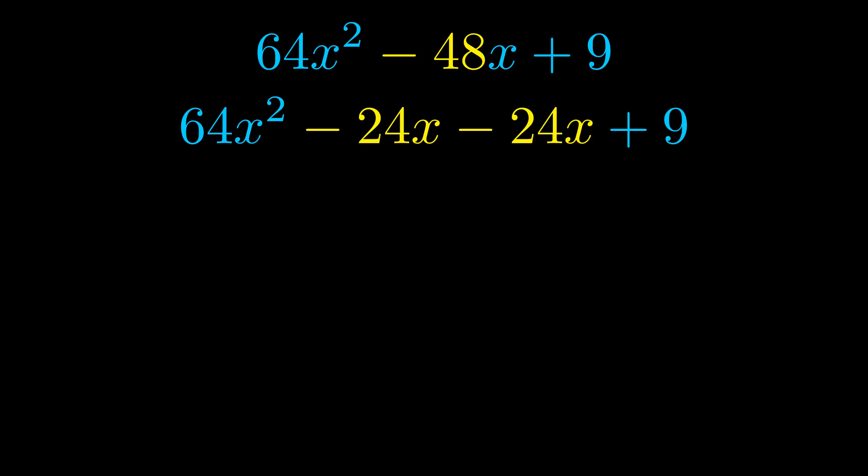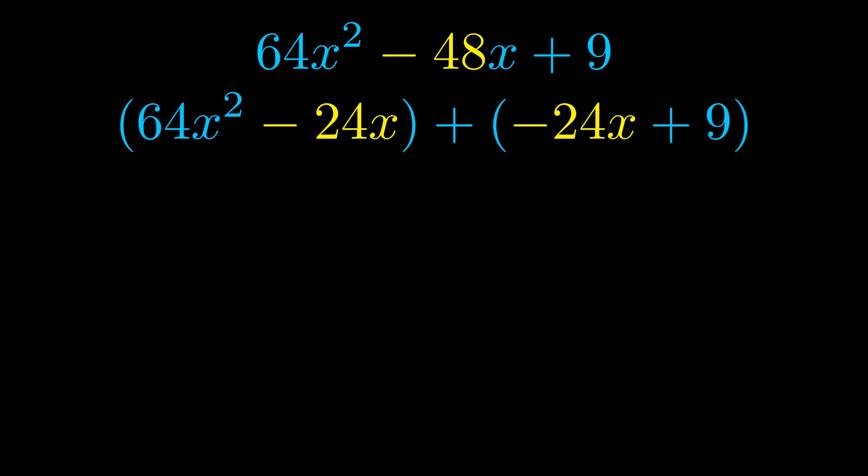Once we've done this we go ahead and put parentheses around the first term and the last term and we do that so that we can take the greatest common factor out of both terms. We can see the greatest common factor is now outside in green. Notice also how what remains inside of the parentheses is the same in both cases. The blue values are the same.